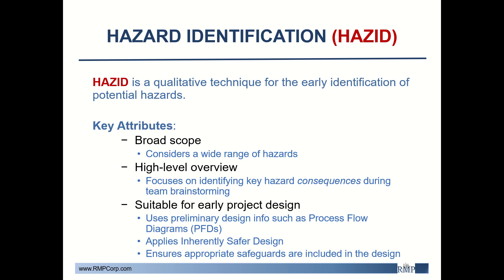HAZID is a qualitative technique that specializes in the early identification of potential hazards within a given process. Key attributes include its broad scope and high-level overview, making it ideal for early project design when less information is available. At this early stage, we typically work from process flow diagrams — a generalized schematic of the process — which may not yet include all instrumentation or equipment details.